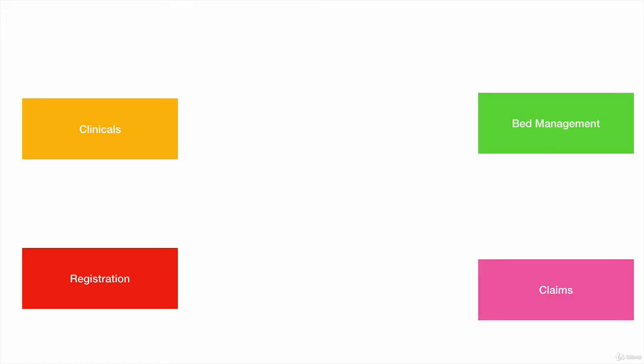When we implement microservices architectures, we can create any number of microservices using the modules provided by Spring Boot. For example, if we are working on a hospital management software, we can create a patient registration microservice, a patient clinicals microservice, patient claim management, and patient bed management microservices. But there will be several non-functional requirements for these microservices.